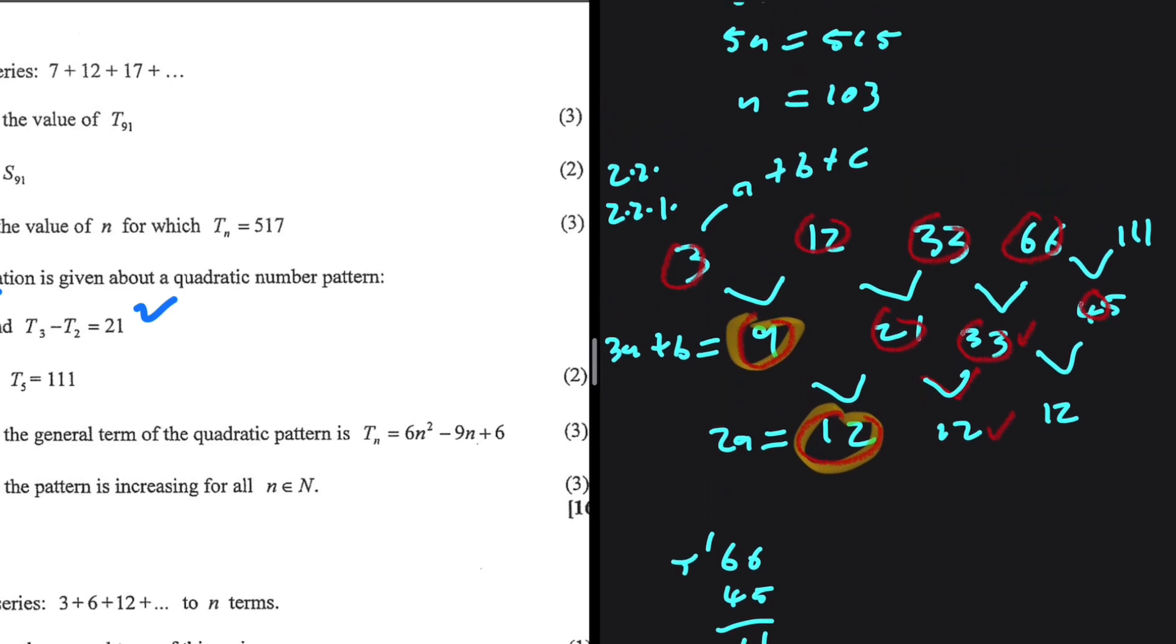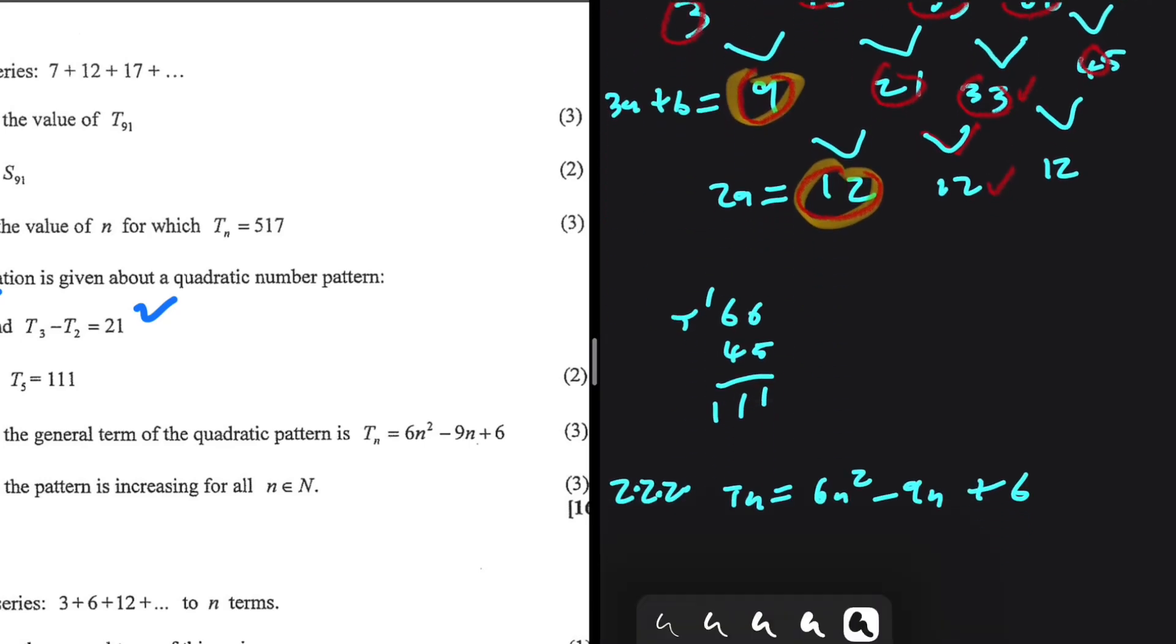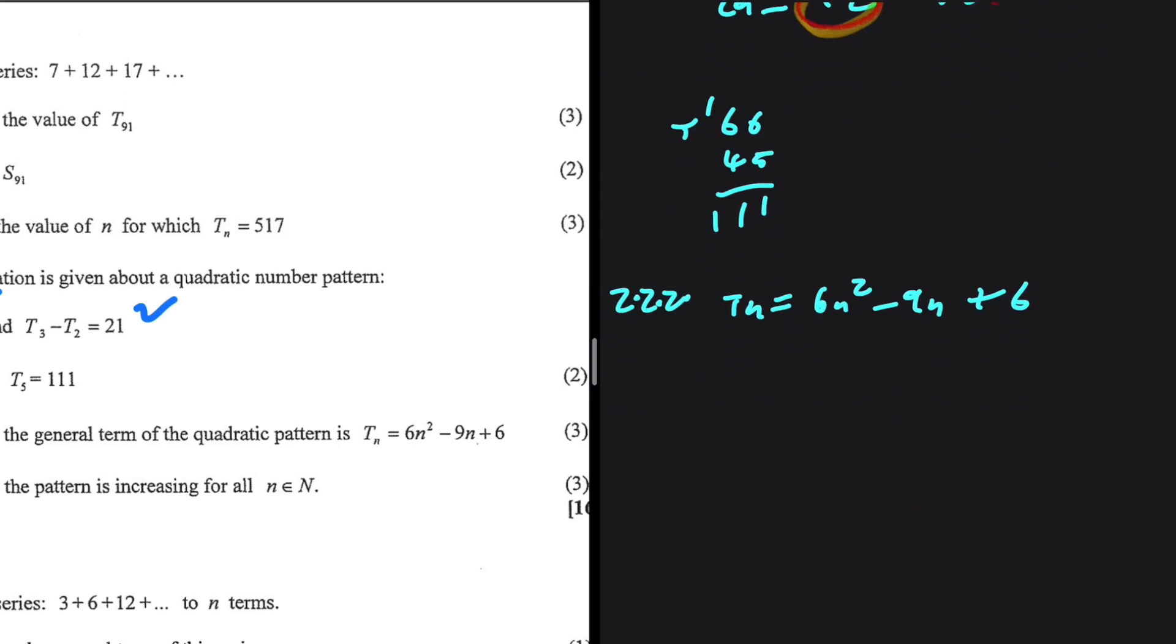If you want to know how that comes about, I've actually proved it in a separate video. You can go on the channel and find that video and see how it comes about. So if 2a equals 12, it is easy to see that a equals 6. And then 3a plus b equals 9. b will be equals to 9 minus 3 multiplied by a. a is 6. So what is 6 multiplied by 3? 18. 9 minus 18 is minus 9.